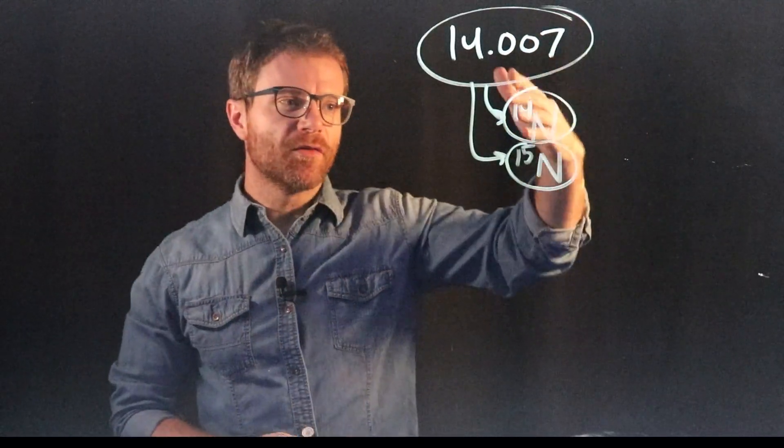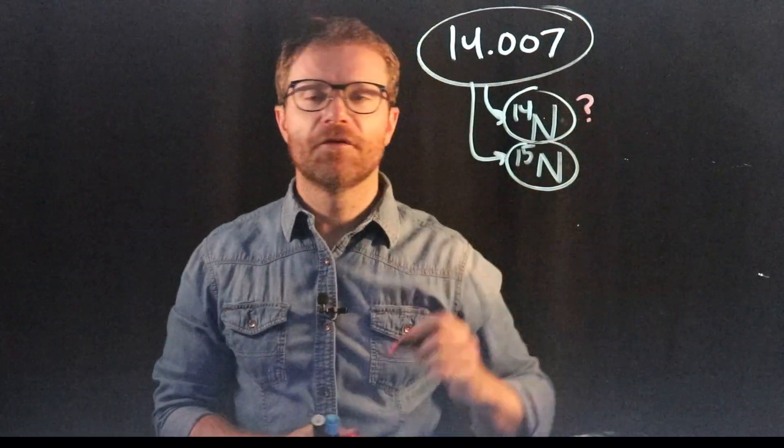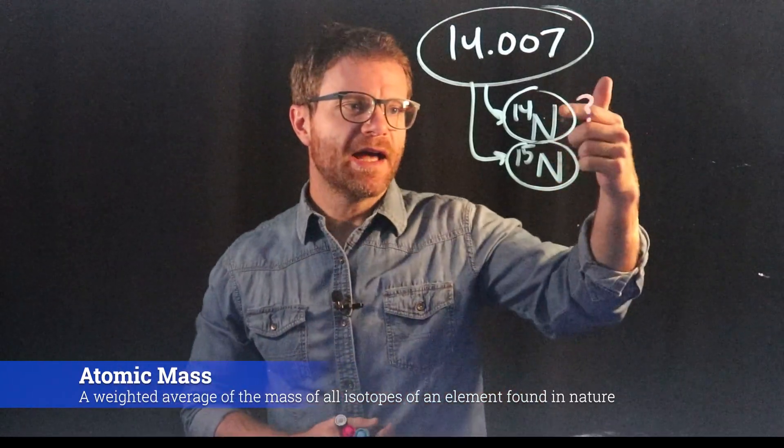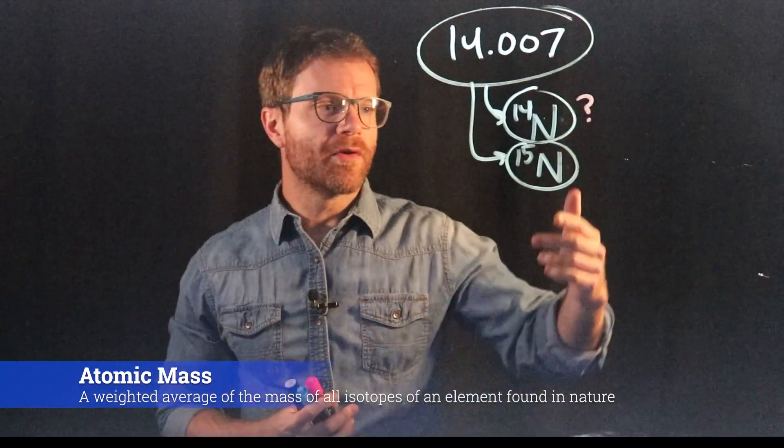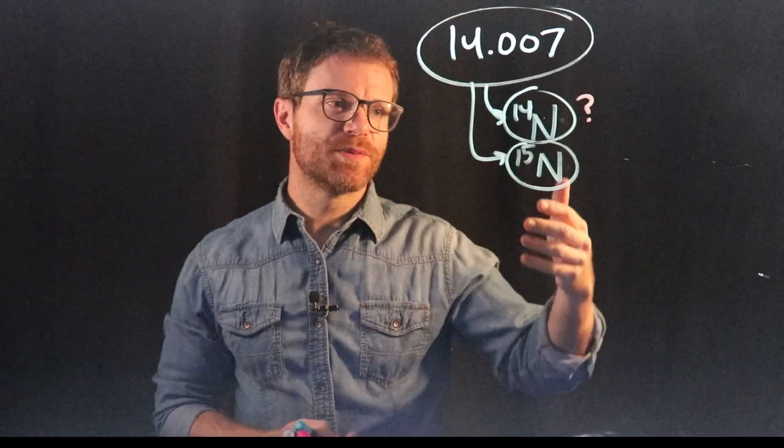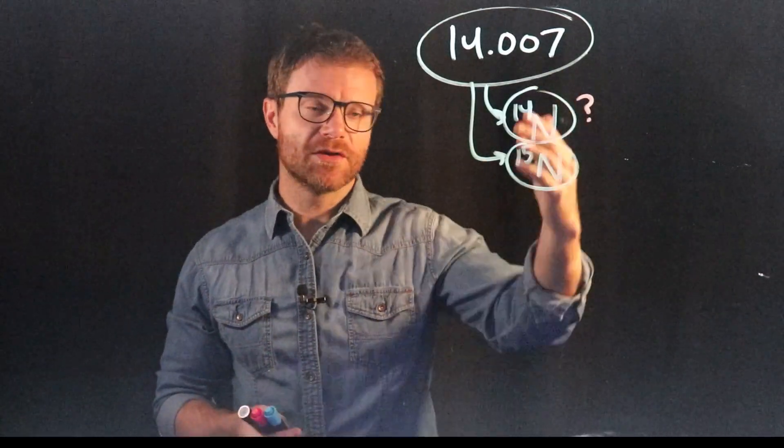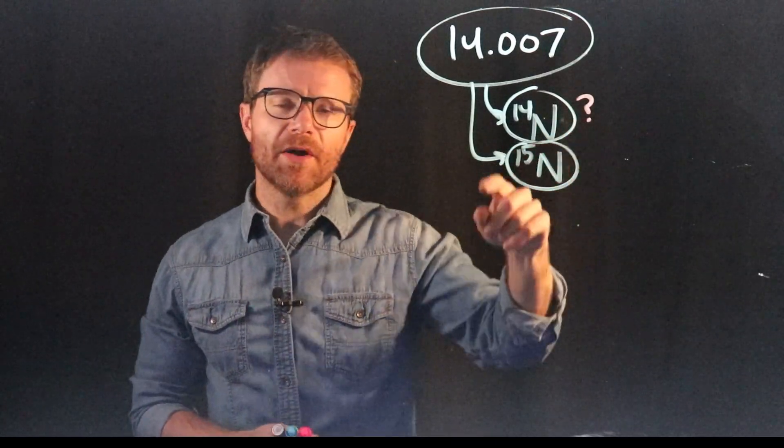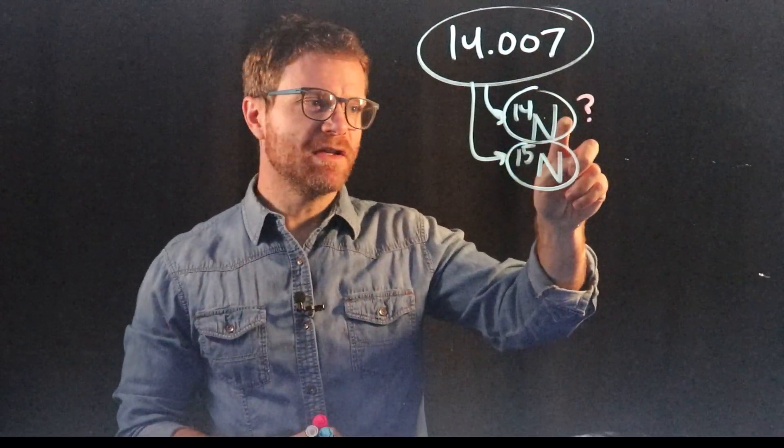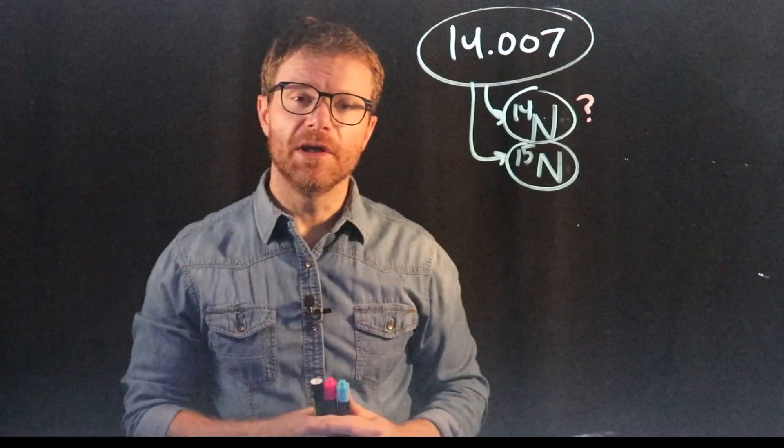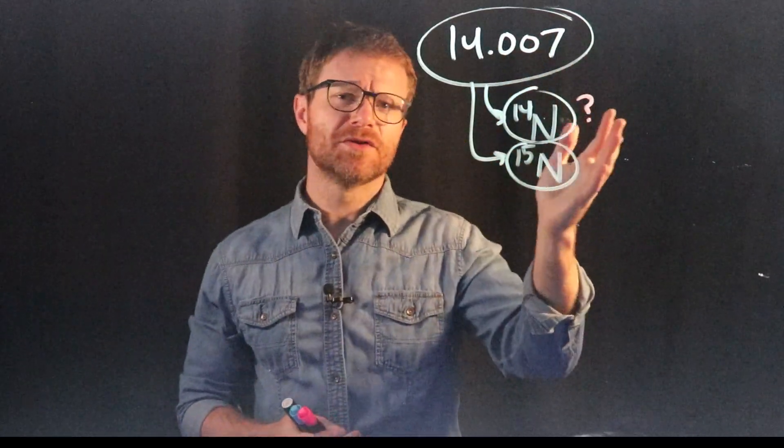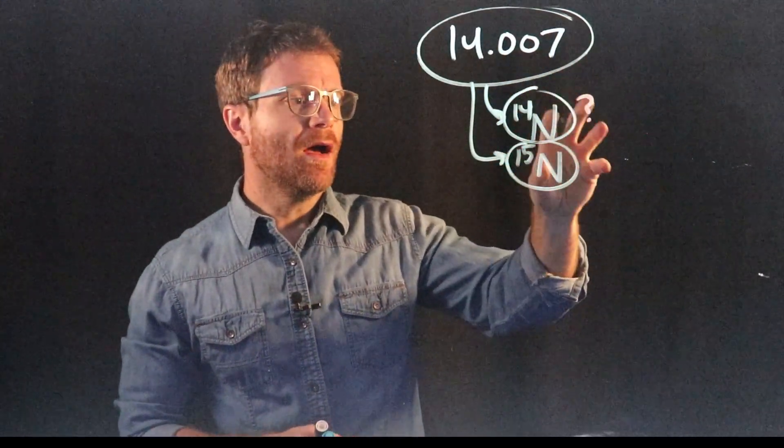But we can do the actual math to figure this problem out. So the way we would solve a problem if we wanted to know exactly how much, let's say, N14 there is, is we would use a weighted average. So a non-weighted average would be we just add up 14 and 15, we divide them by the number there are, there's two of them, and we would get 14.5. But that's not what we did here. This is a weighted average because they're different amounts. They're not the same. You can't just divide them by two. But we know something about the percentages of each of these. We know that let's say there was 75% N14. How much N15 does there have to be? Well, it would have to be 25%. Because whatever percentages these are, they have to add up to 100% because there's no other, as far as we know for this problem, isotopes of nitrogen.